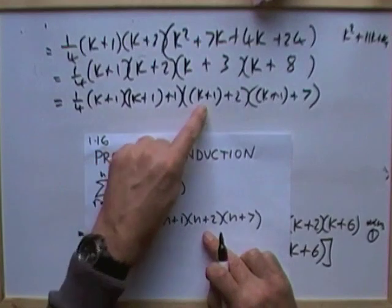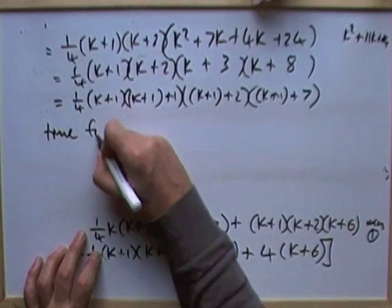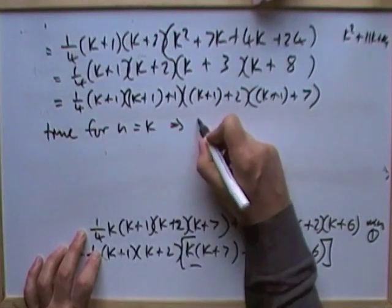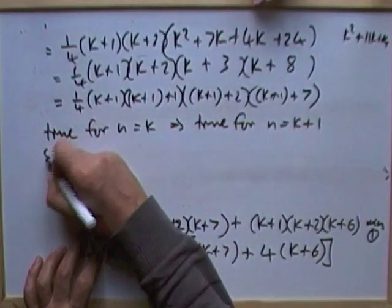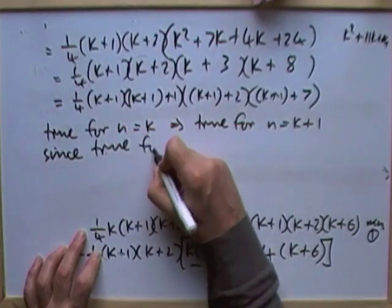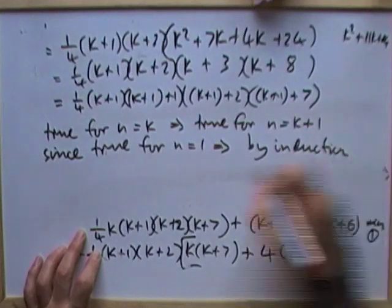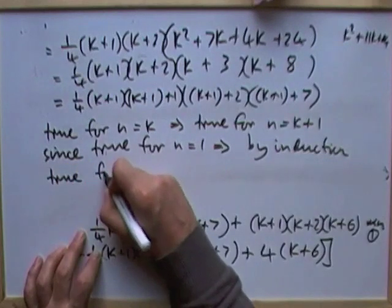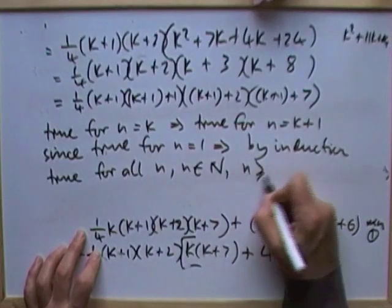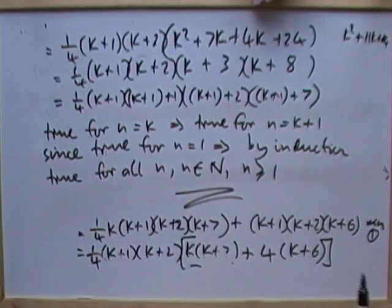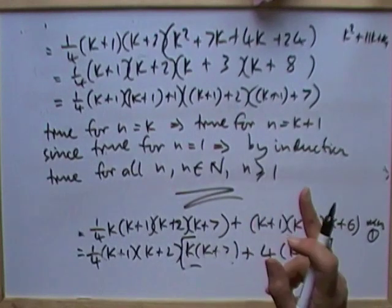Each of the n's has been replaced by k+1. Now we can make a statement: true for n equals k meant it was true for n equals k plus 1. Since it was true for n equals 1, that means, by induction, it's true for all n in the natural numbers, n greater than or equal to 1. A simple one — number 117 isn't quite so simple; maybe that next time.